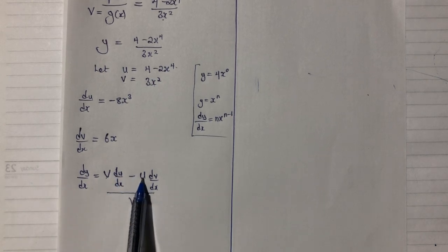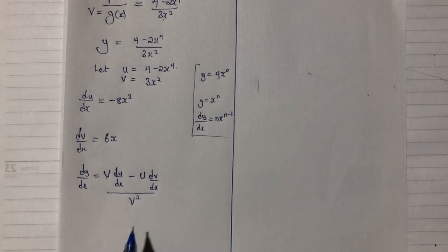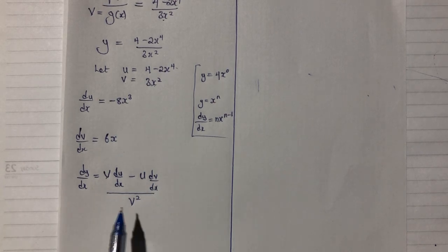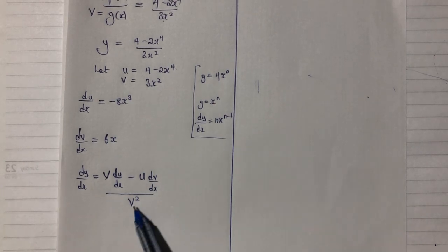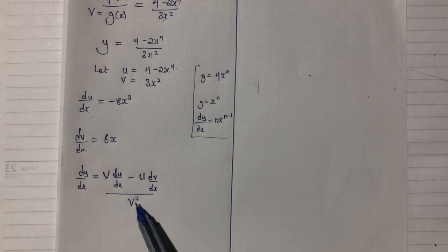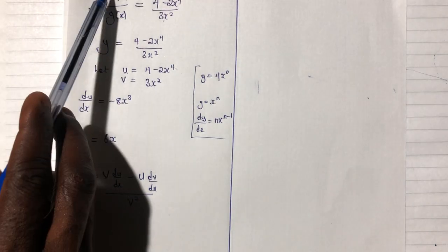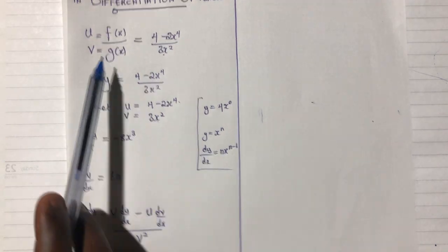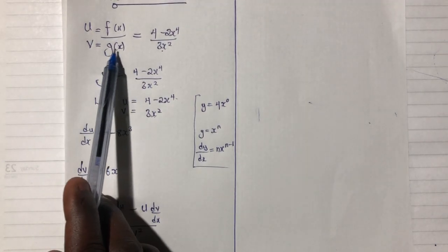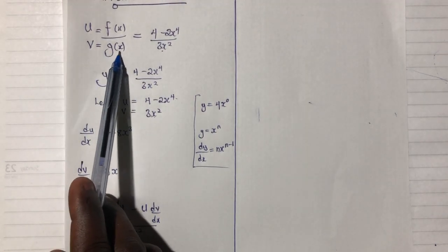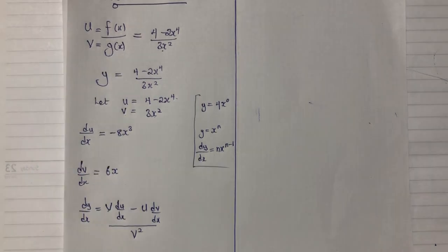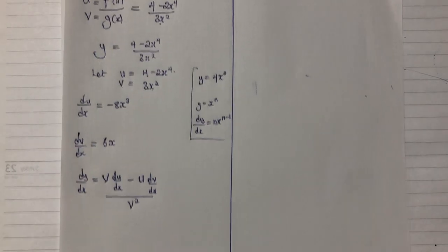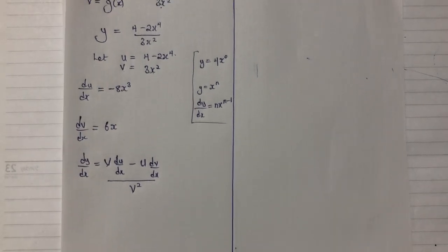Whether you are using f(x) and g(x), you always start with the denominator function, which is g(x) squared. Now let's substitute the values into the formula. Our dy/dx will give us: v was 3x squared, multiplying the derivative of u which was minus 8x cubed.